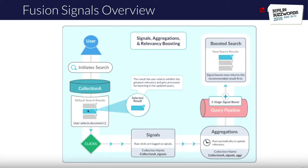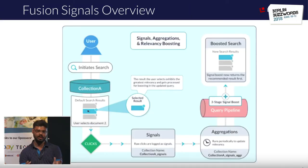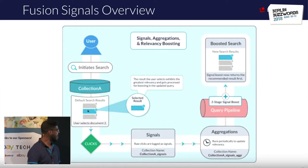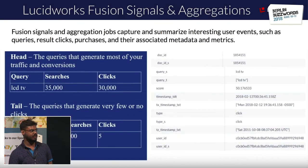This is how Lucidworks Fusion captures user events as signals. A user comes and queries for a particular query Q, clicks on an item I; the tuple (Q, I) with timestamp T is stored in a collection called signals. These signals are aggregated periodically — maybe weekly or bi-weekly — and the aggregated signals are then fed into query pipelines or query model configurations, so that the next time a user searches for query Q, item I appears higher in the results.